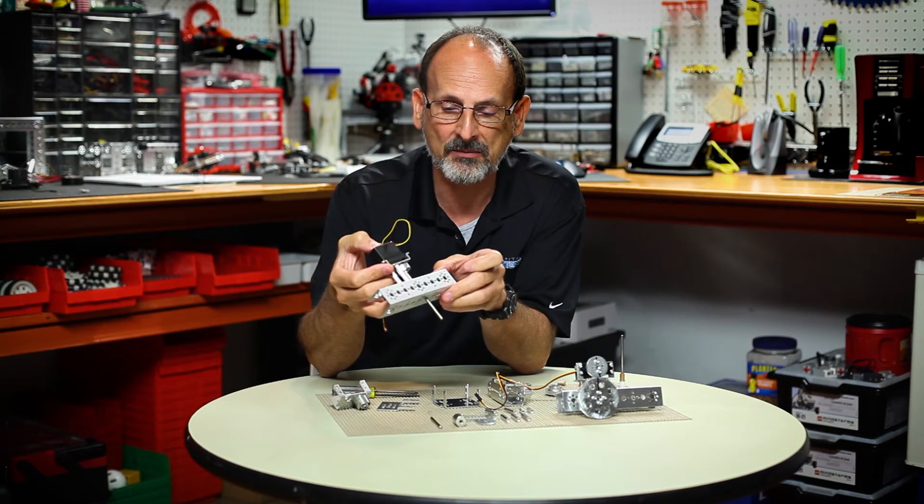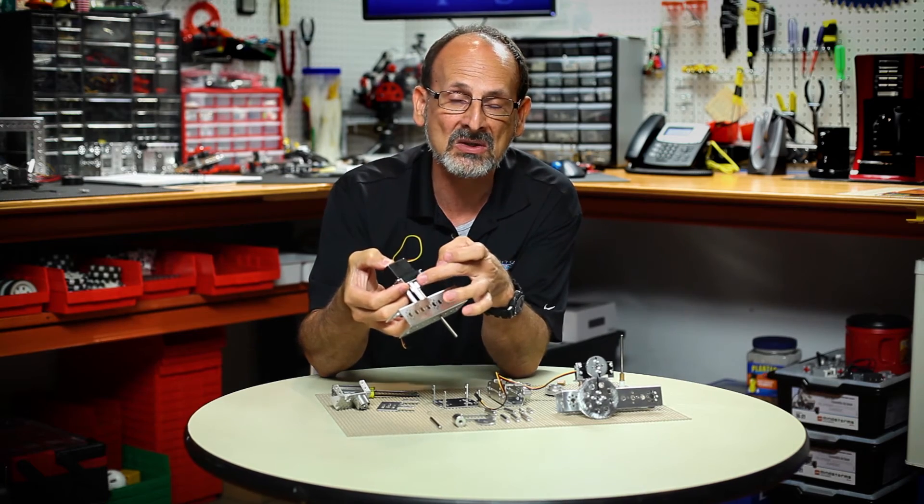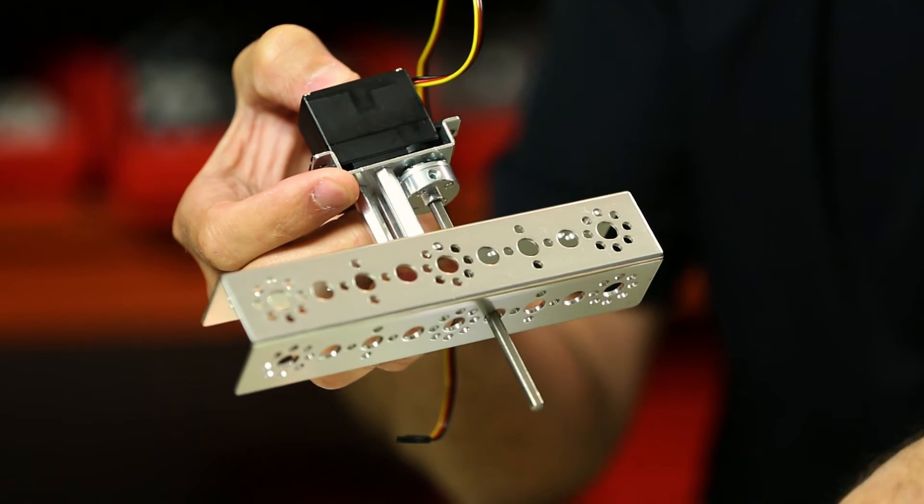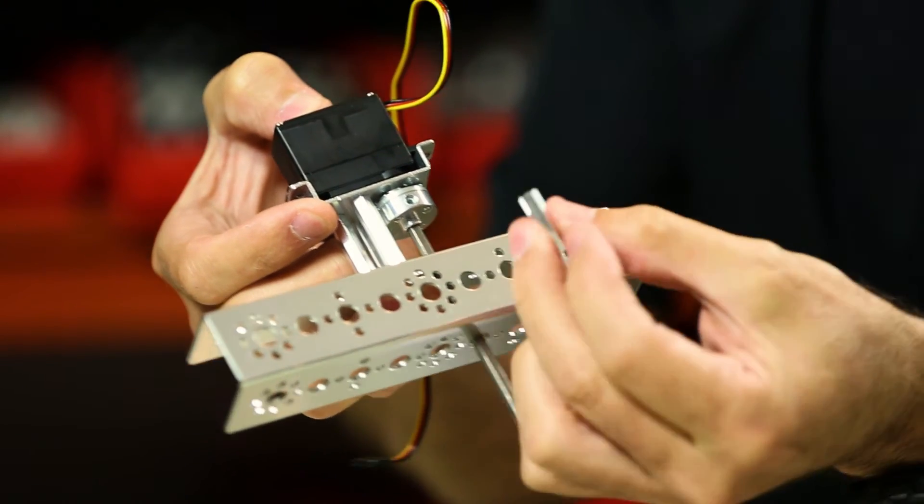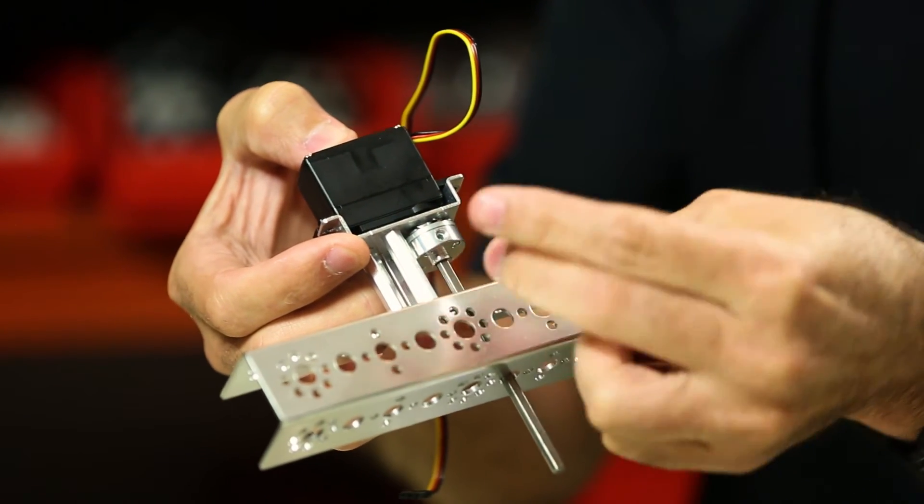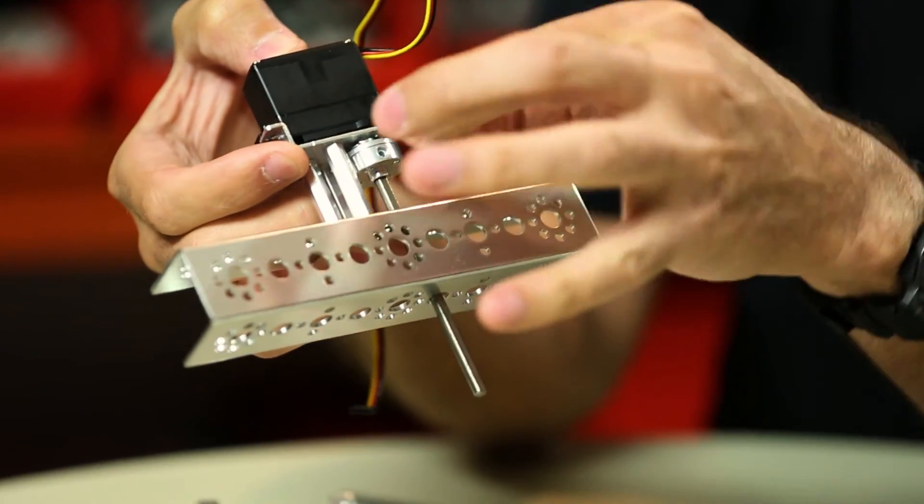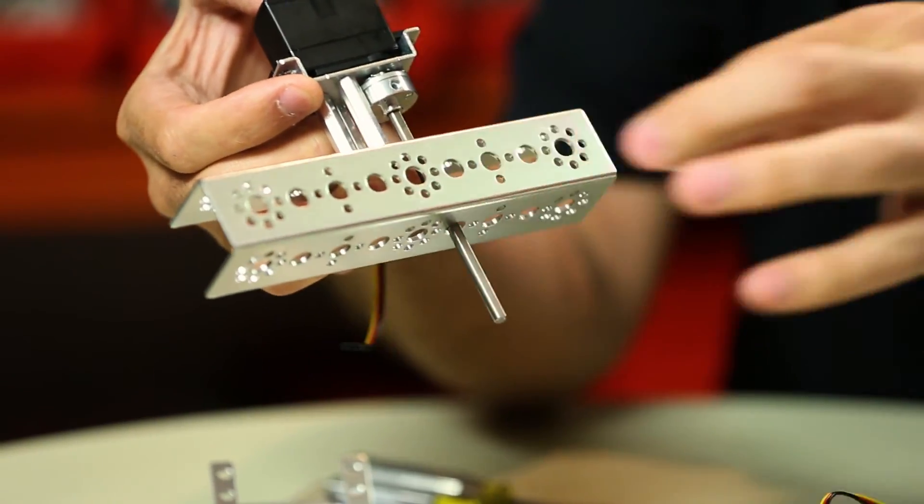So I hope that makes sense and again I can vary the distance that this servo is away from the channel by just changing the height of the standoffs. I can move that closer. It's a much shorter standoff. It would fit the same way and hold that piece away.